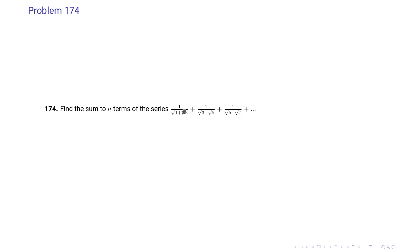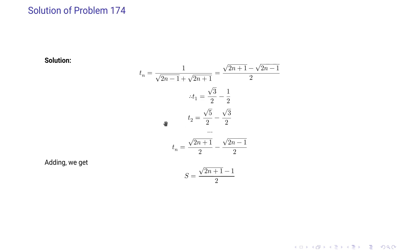Problem 174: Find the sum to n terms of 1/(1+√3) + 1/(√3+√5) + 1/(√5+√7) + … The nth term is 1/(√(2n−1) + √(2n+1)). Rationalizing by multiplying by (√(2n+1) − √(2n−1)) gives numerator √(2n+1) − √(2n−1) and denominator 2. The series telescopes and the sum equals (√(2n+1) − 1) / 2.